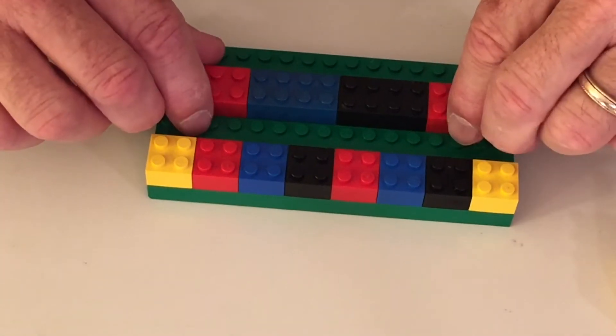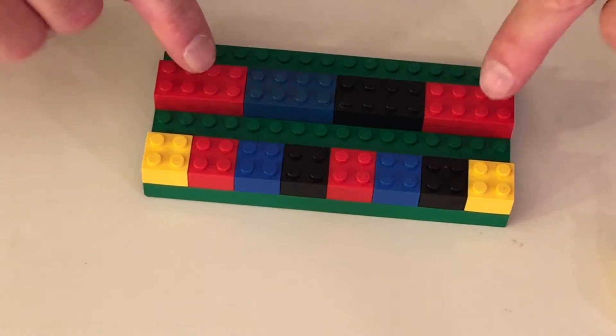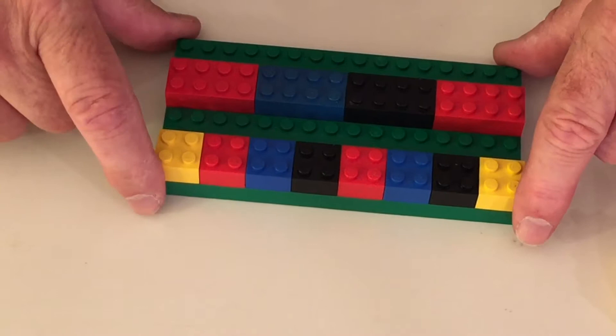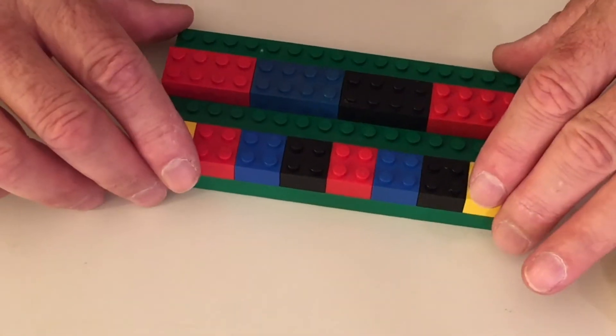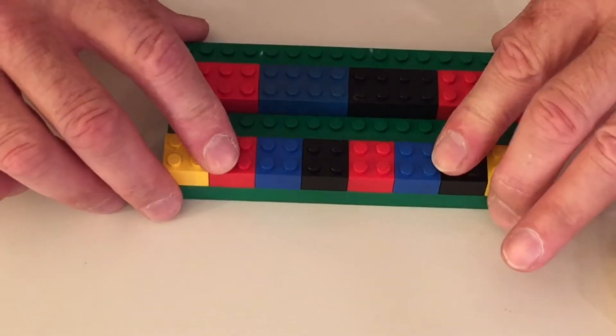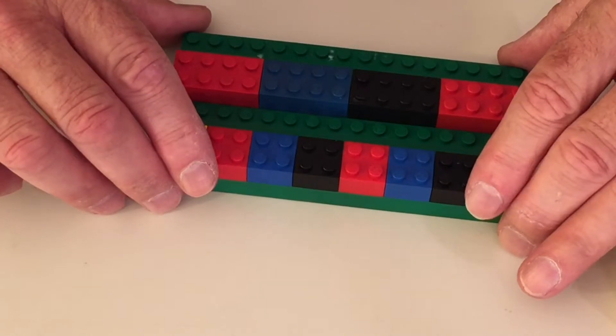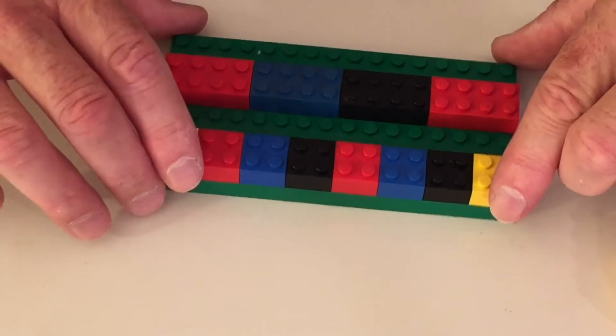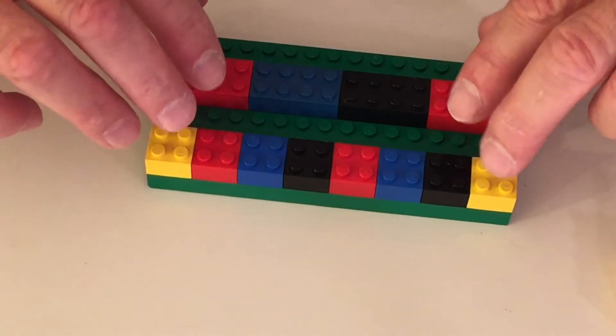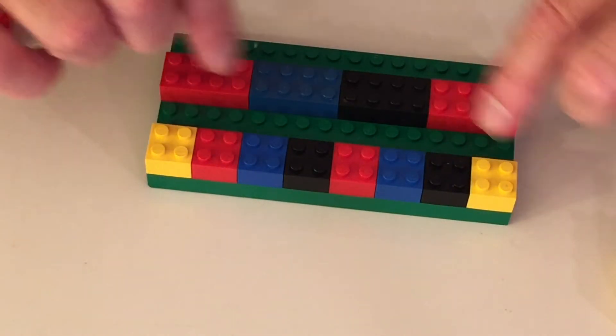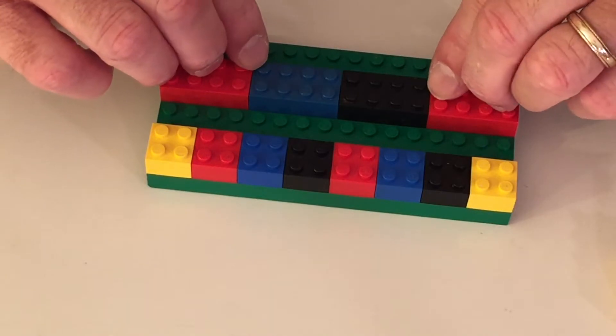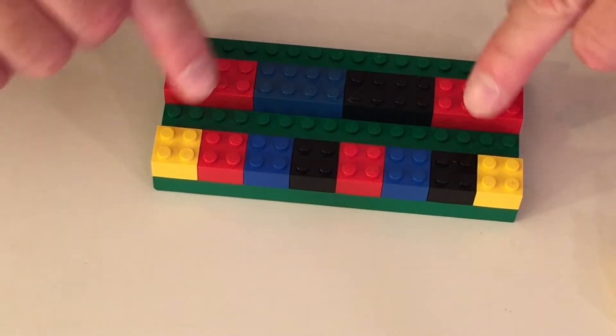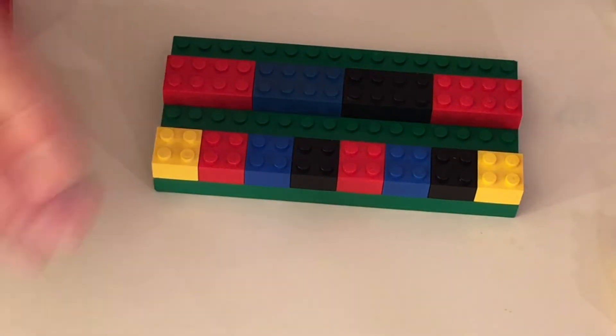So it's the same. When we do four times eight, we can do four eight dot blocks or eight four dot blocks and we still get the same number. It's the same thing.